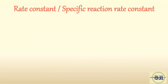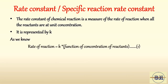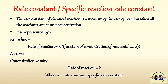Now let's see what is meant by the rate constant, or the specific reaction rate constant. The rate constant of a chemical reaction is a measure of the rate of reaction when all the reactants are at unit concentration. It is represented by a small k. If we assume concentration equals unity, then rate of reaction equals K. Hence the rate constant equals the rate of reaction when all reactants are at unit concentration.